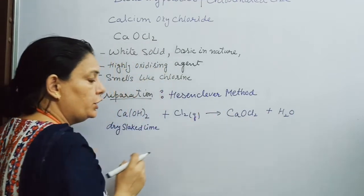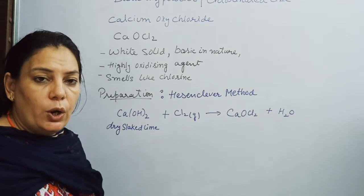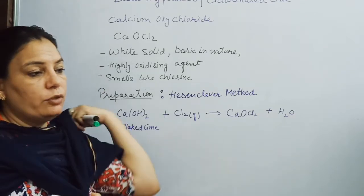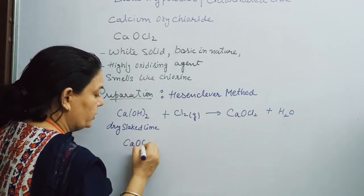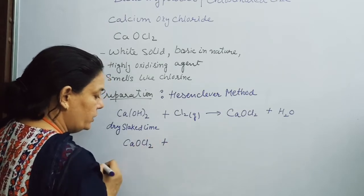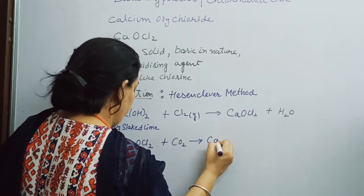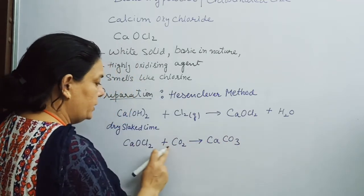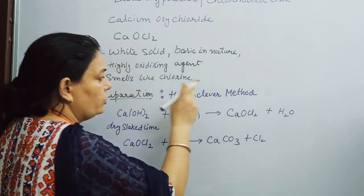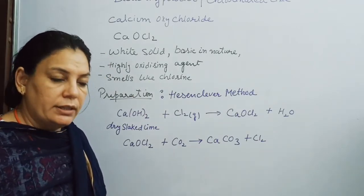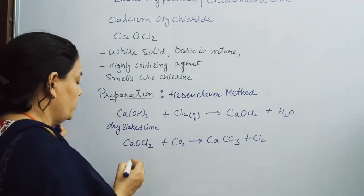Now, this Calcium Oxychloride, when kept in the open, reacts with atmospheric carbon dioxide. CaOCl2 reacts with CO2 to form Calcium Carbonate, CaCO3, plus chlorine. Due to this reaction, it works as a bleaching agent as well as an oxidizing agent.